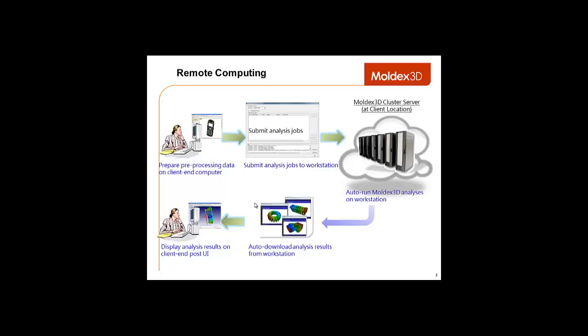Moving on, this is the way the private cloud and the pay-per-use system works. First, users prepare pre-processing data on the client end computer, and next they will submit the analysis jobs to a workstation. The workstation then auto-runs Moldex 3D analysis, and when that's finished, users will be able to download the post-process results back onto the client computer and review the results to look for ways to optimize their design.